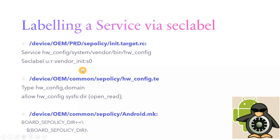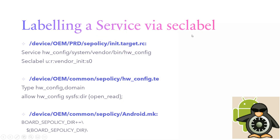In the init.target.rc file, I'm labeling the service and defining the context as vendor_init where this hardware_config service will run. Then in the .te file, I define the domain type as hardware_config domain and write an SE policy to allow that domain the appropriate file type, class, and permission. These two files need to be added in android.mk, same as earlier. The init.target.rc step is required because the service starts during device boot-up.